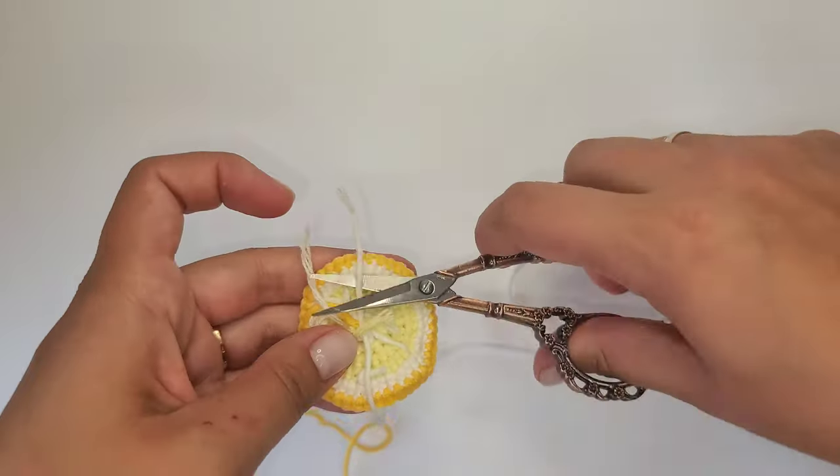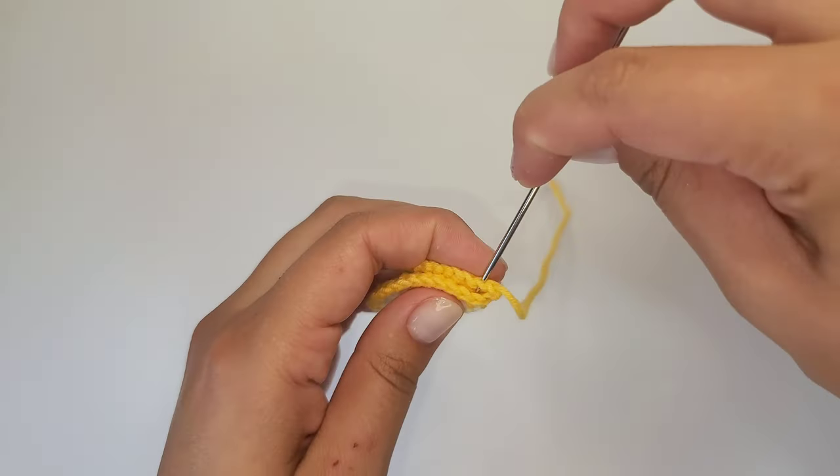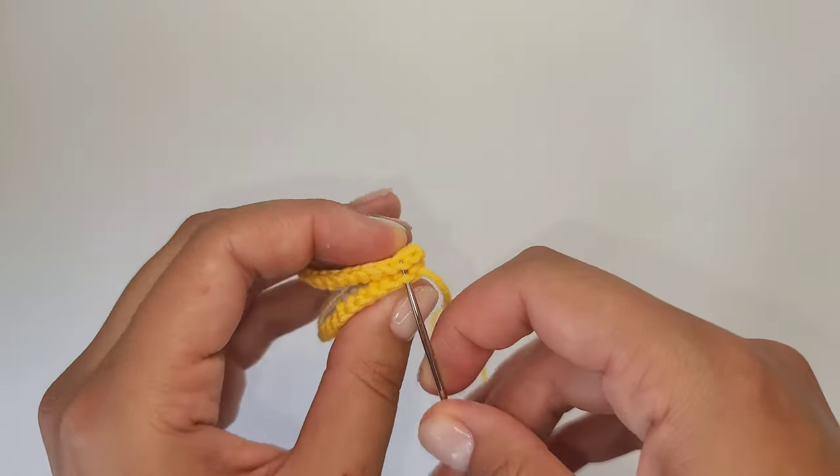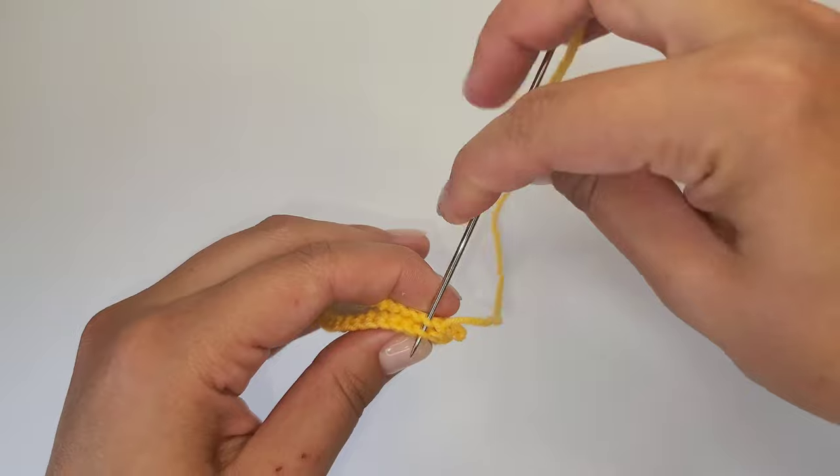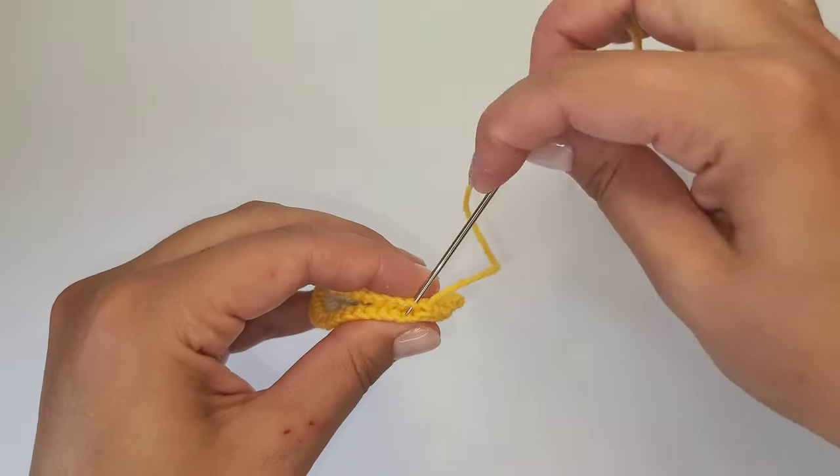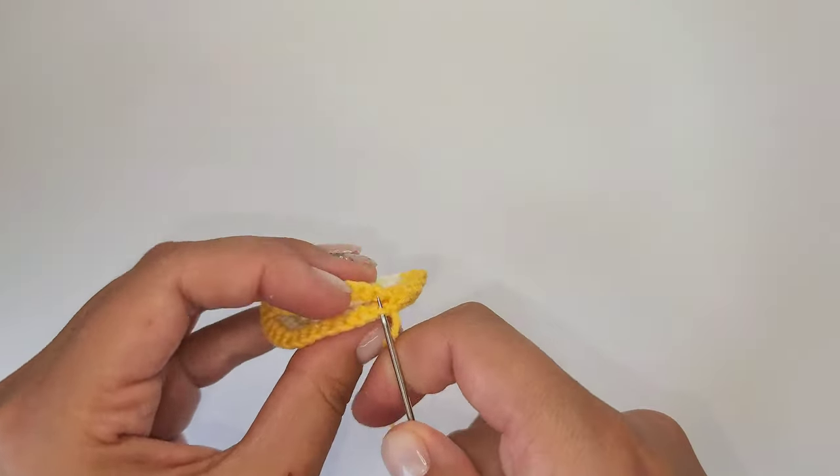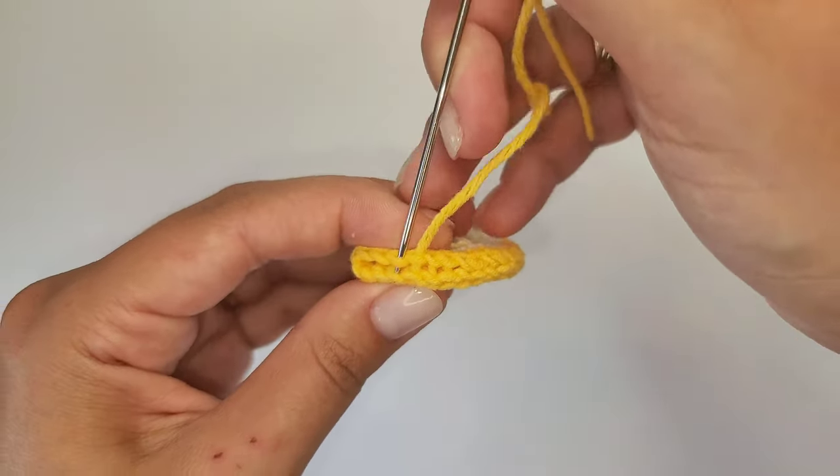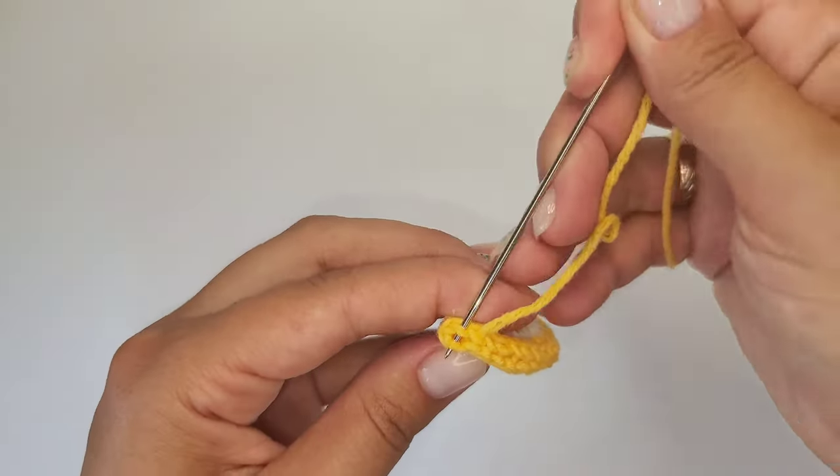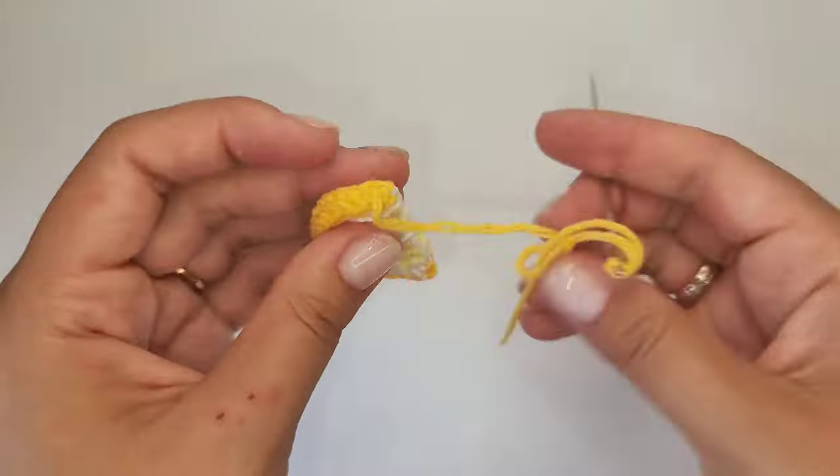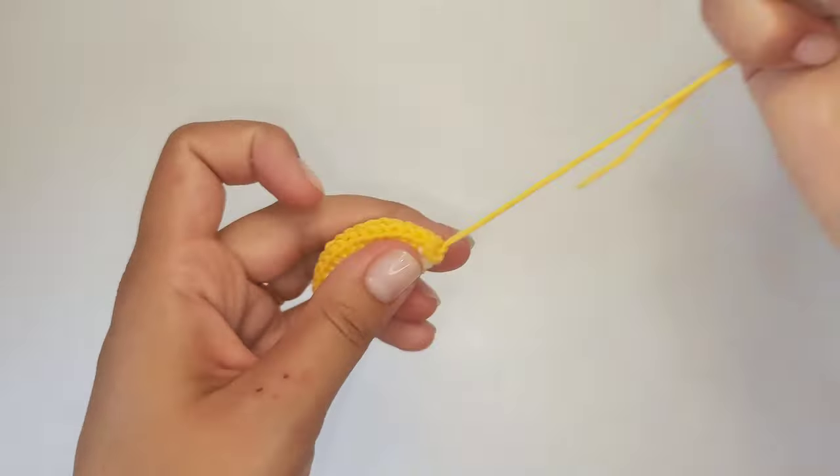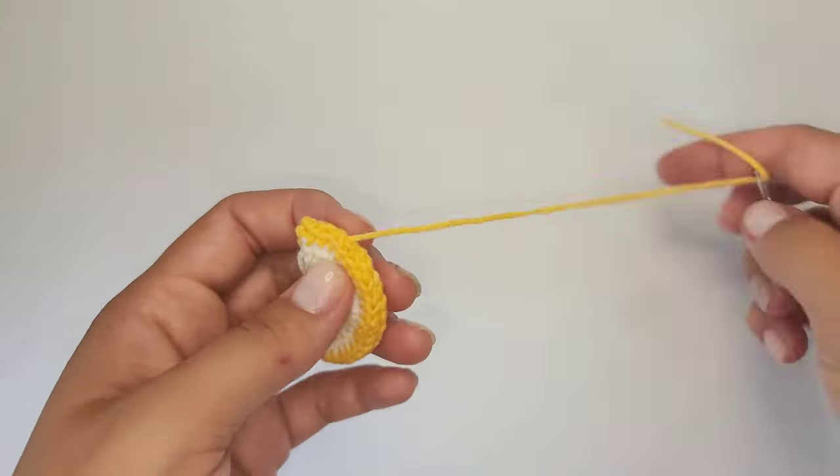After that fold the detail and sew the edges together. Insert the needle through back loops only while sewing. Now fasten the thread and weave in the yarn tail.